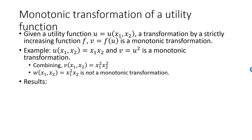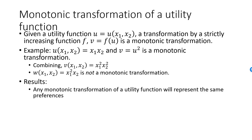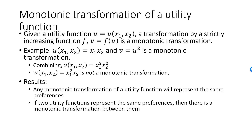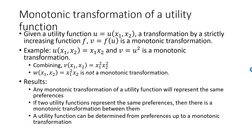So why are monotonic transformations important? Well, if you start from a utility function u and create a new one, v, using any monotonic transformation, then v must represent exactly the same preferences as u. The reason is that a monotonic transformation always preserves order — given any sequence of bundles, u and v will order them in exactly the same way. The opposite is true as well: if you have two utility functions representing the same preferences, it's always possible to find a monotonic transformation between them. For this reason, it is common to say that the utility function can be determined from preferences, but only up to a monotonic transformation.